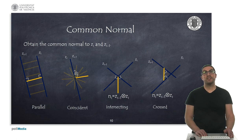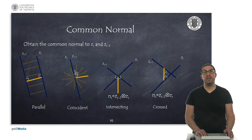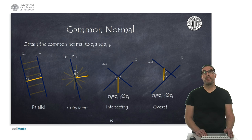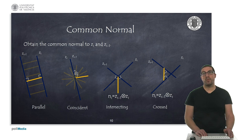The X axis must point in the direction of the common normal between consecutive Z axes — that is, the direction perpendicular to both Z_{i-1} and Z_i. There are four possible cases depending on the relationship between Z_{i-1} and Z_i. If joints have parallel axes, there are multiple common normals; we usually choose the one that tries to make some distance parameter zero. If the Z axes are coincident, we again have multiple common normals; we will choose one that tries to make some angular parameter equal to 0, π/2, π, or 3π/2.